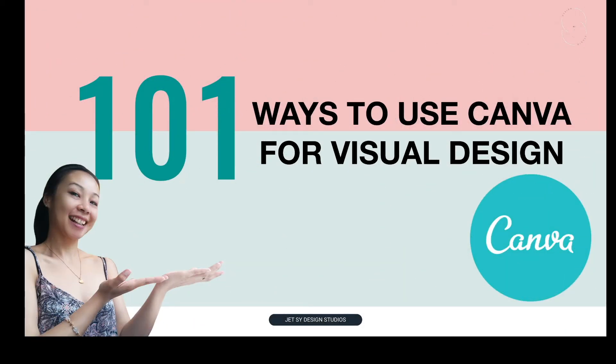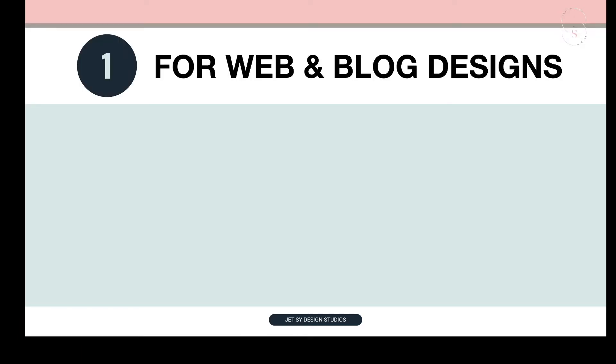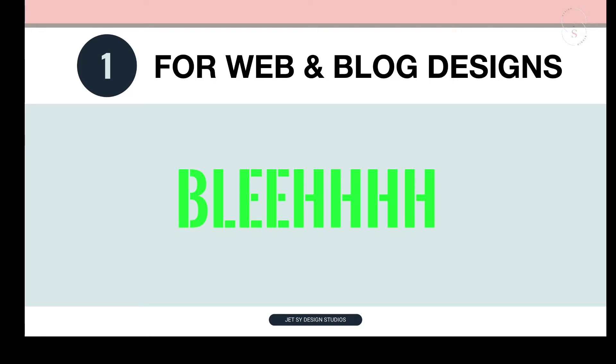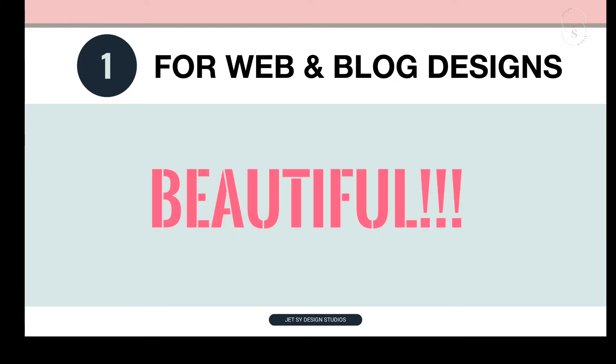101 ways to use Canva for visual design. Number 1: Use Canva for web and blog design. If you're starting a blog or run an existing blog, Canva makes it easy to turn your blog's design from black to beautiful.